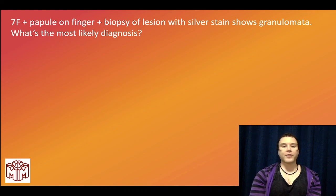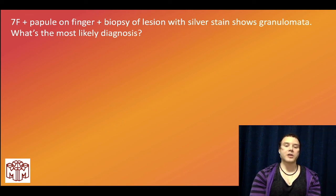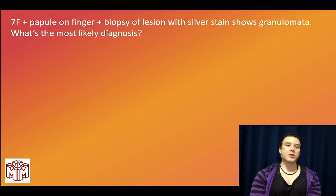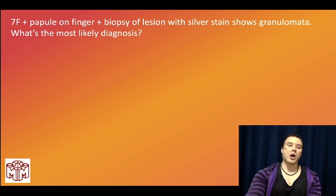Seven-year-old girl with a papule on the finger; biopsy with silver stain shows granulomata — most likely diagnosis? Cat scratch disease, Bartonella henselae. The question doesn't have to mention an actual scratch — they can just say granulomata with silver stain and a papule. Do not confuse this with Pasteurella multocida, which is due to cat and dog bites.